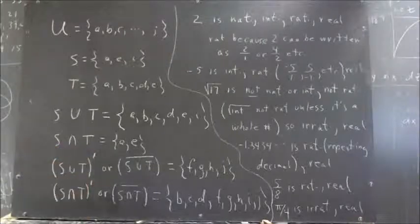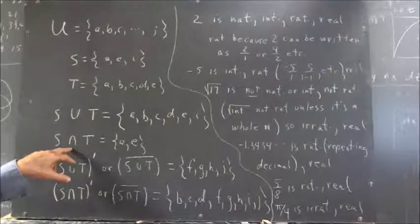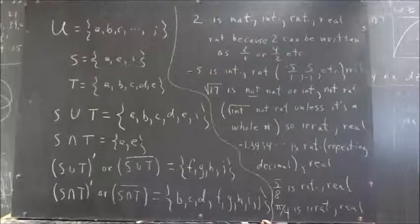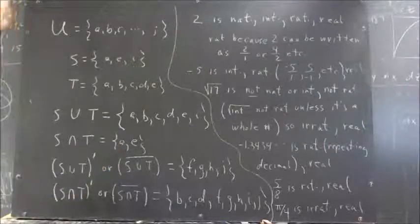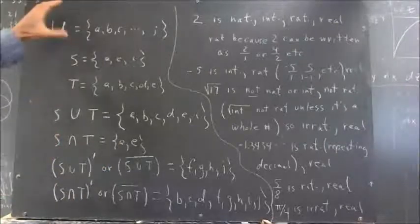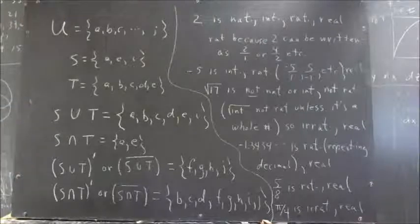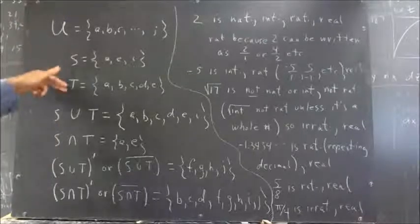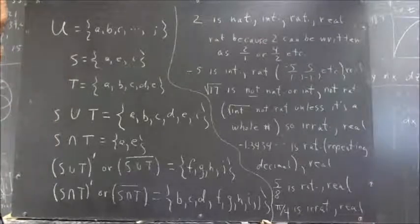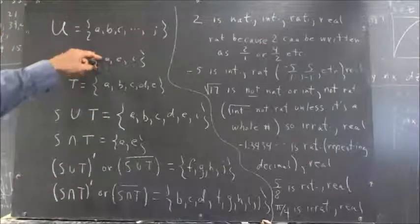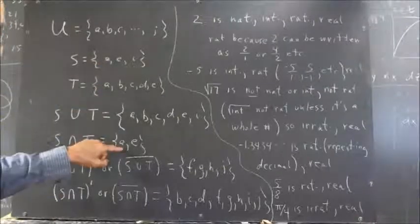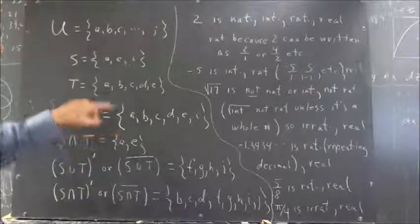Set S intersection T. Intersection means it's got to be in both sets to be in the intersection. So we don't even have to look at the set U, we just look at the sets S and T. A is in S, it's also in T, so it's in the intersection.